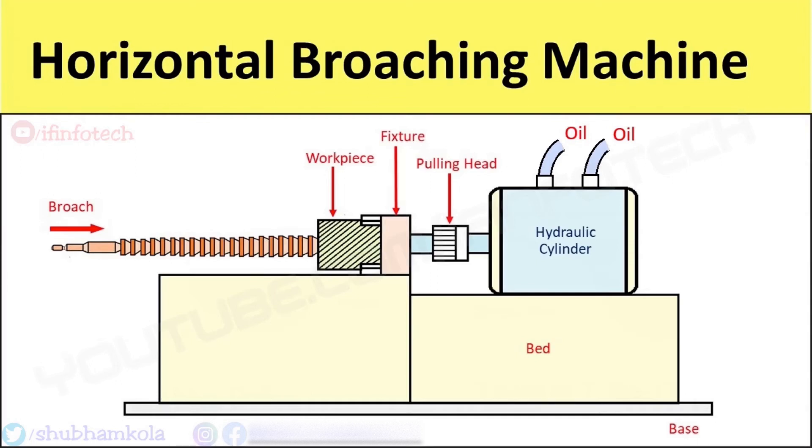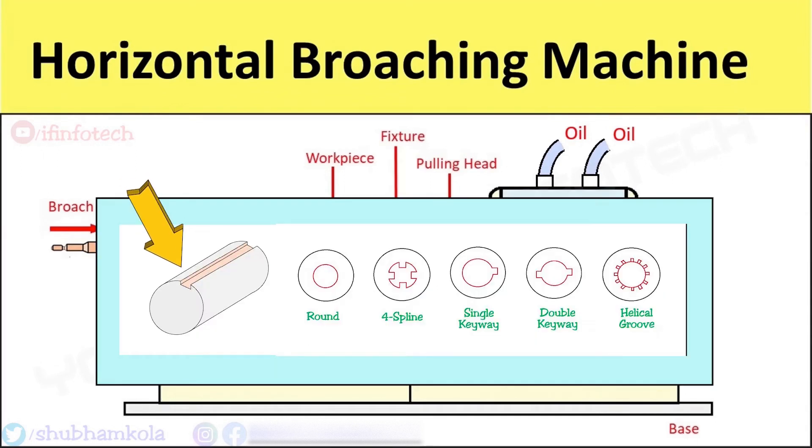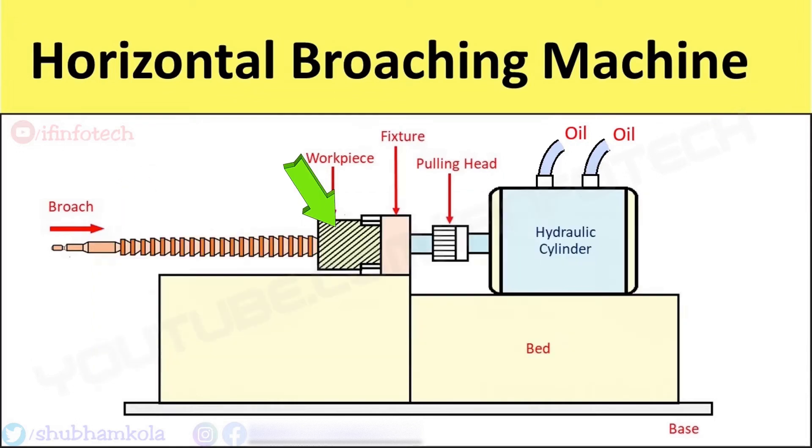The horizontal broaching machine is used to make keyways and spline slots on workpieces. Here the workpiece is fixed on a fixture and the broach is pulled. The sharp edges of the broach penetrate into the workpiece.